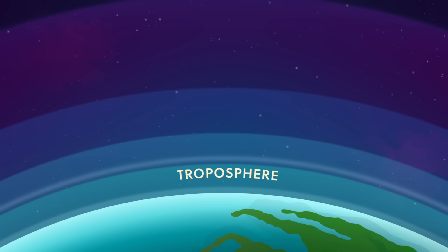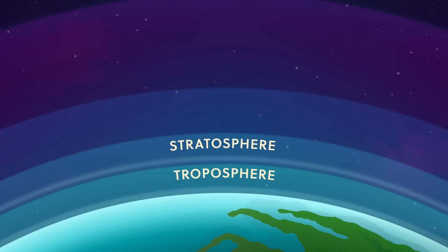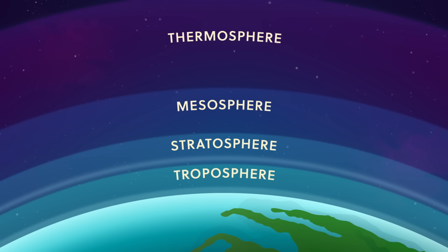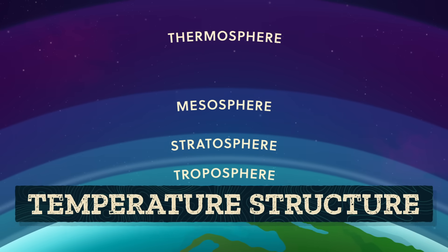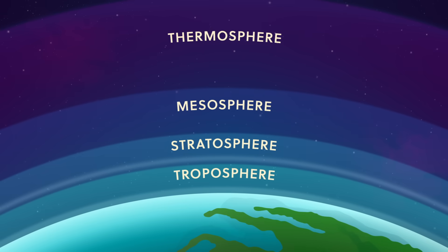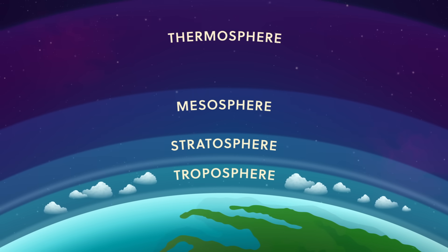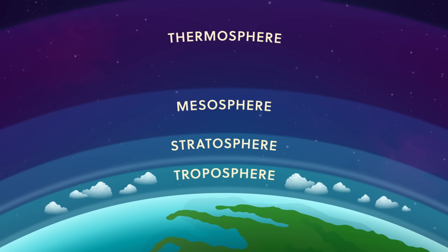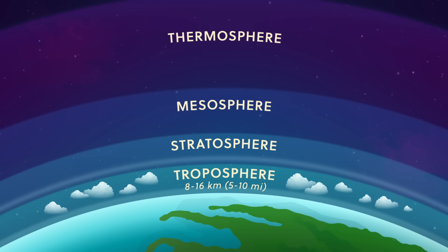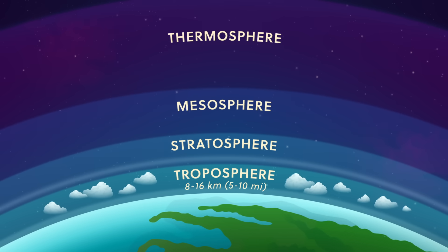The four layers we hear about most are the troposphere, stratosphere, mesosphere, and thermosphere. They come from studying the atmosphere based on its temperature structure. Each layer has a different starting temperature that decreases or increases as we move towards outer space. Temperature even affects the thickness of the layers. The layer closest to the Earth where all the weather and most of the air molecules exist — the troposphere — can extend out anywhere from 8 to 16 kilometers above the surface, depending on the season or latitude of where you are on the globe.